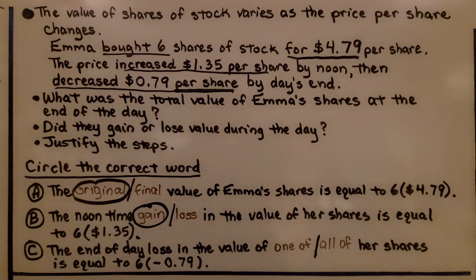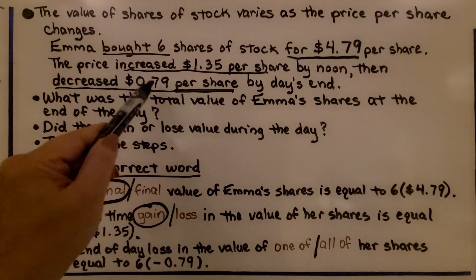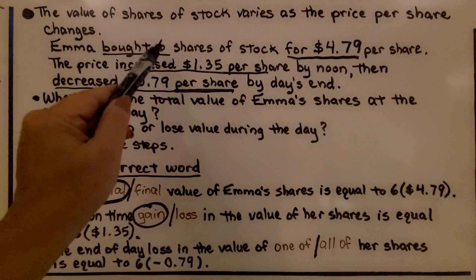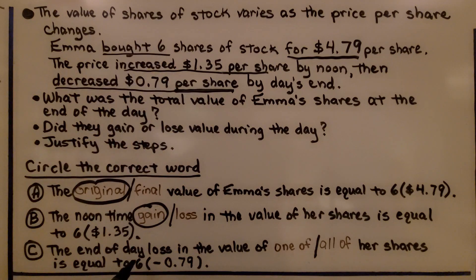C says the end of day loss in the value of one of or all of her shares is equal to 6 times $0.79. So is it 6 times $0.79 one of or all of her shares? Well, it says it decreased $0.79 per share, but she bought 6 of them. So we've got 6 times $0.79. So that would be all of them because it's being multiplied by 6, by all of her shares.